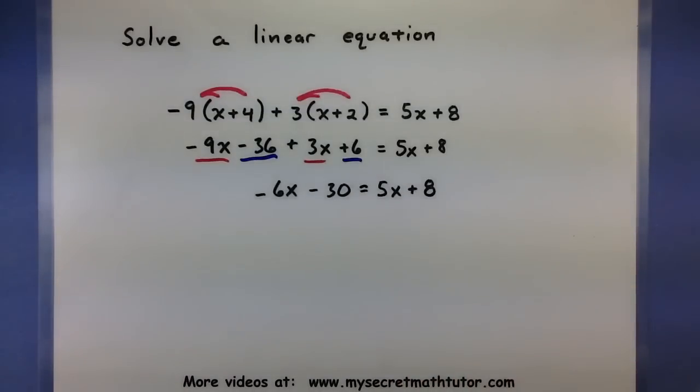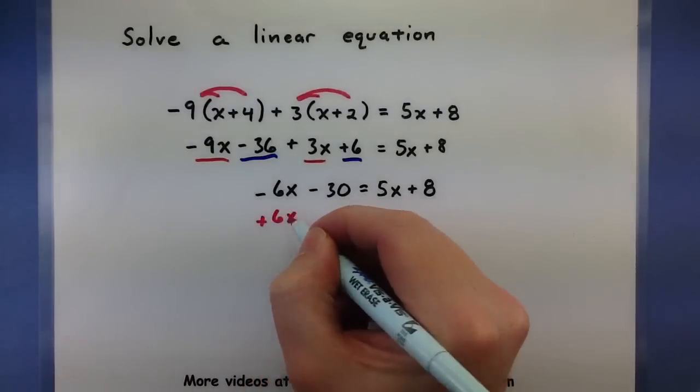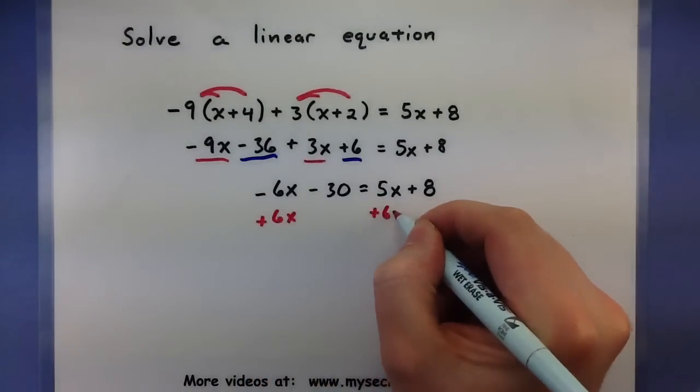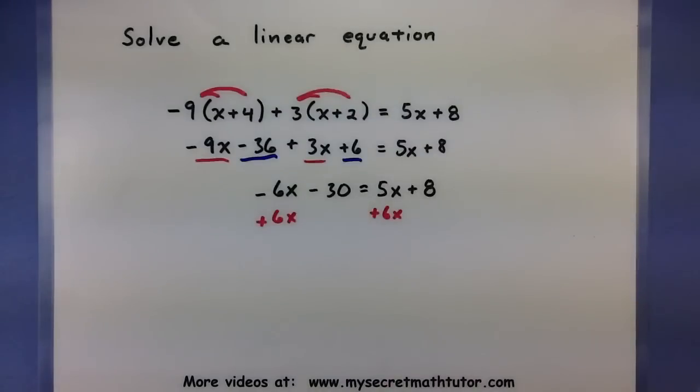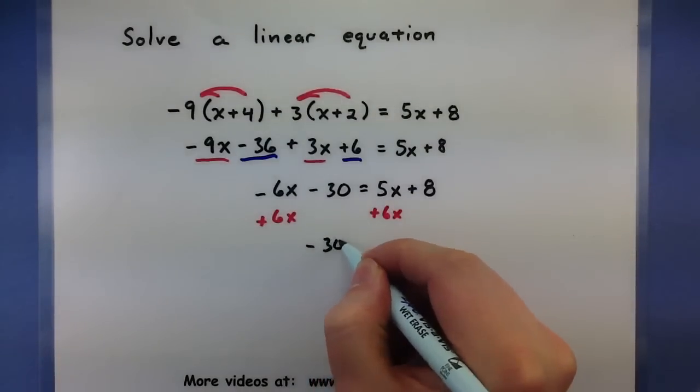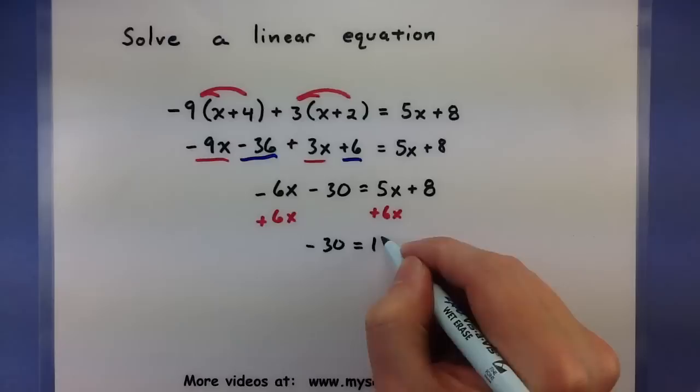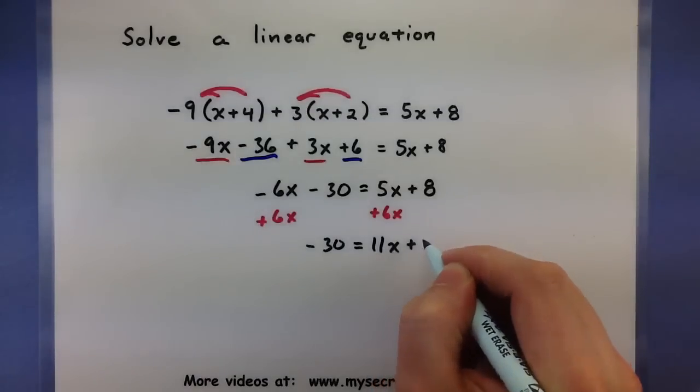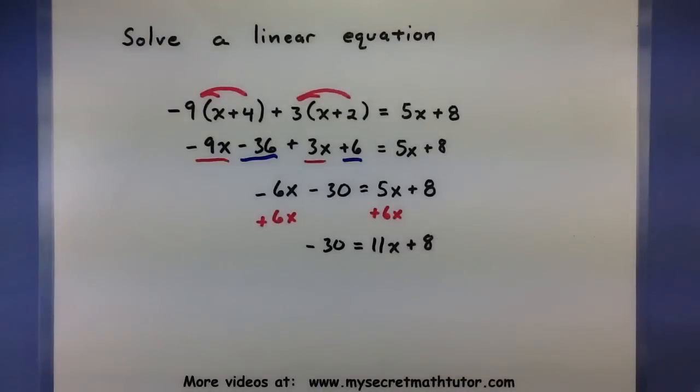That's looking pretty good, but we still haven't gotten all of our x's together. Let's go ahead and do that now. I'm going to add a 6x to both sides.